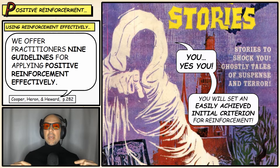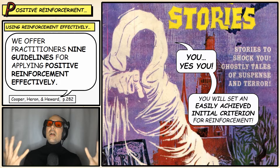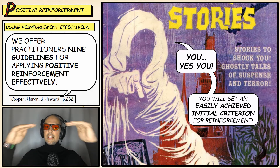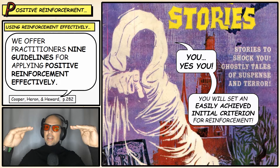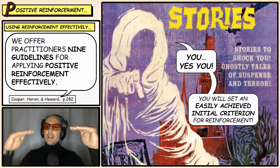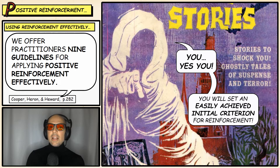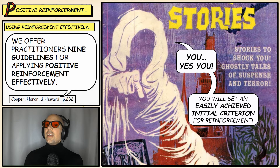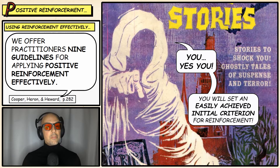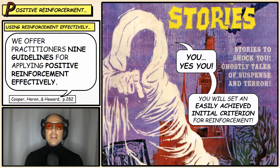If you want to decrease behavior — for example, harmful behaviors — look at the average and the lowest level of the behavior during baseline and choose a criterion somewhere in between those two endpoints. This guarantees it will be slightly challenging but very attainable, which means you can reinforce the individual and behavior modification can get going.